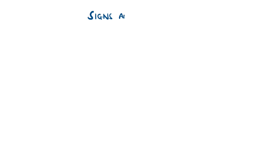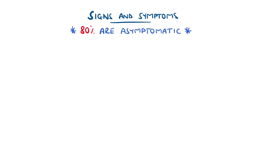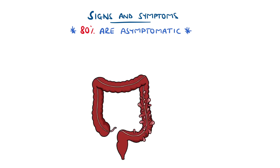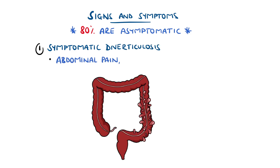In around 80% of people with diverticula, they are asymptomatic. Symptoms that do develop vary significantly depending on the underlying process. For example, symptomatic diverticulosis commonly features abdominal pain, typically in the left lower quadrant, bloating, and intermittent constipation or diarrhoea.